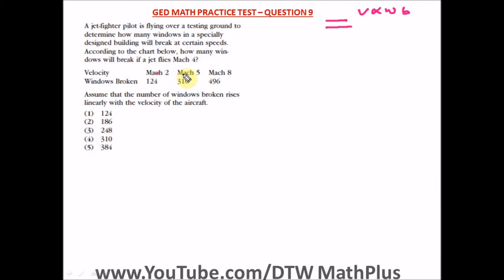From here we can see something. We can see that the difference between each Mach, that's 5 minus 2 is 3, and 8 minus 5 is also 3. You can see the linear relationship here. And 310 minus 124 will give us 186, and 496 minus 310 will also give us 186. So it shows the linear relationship.